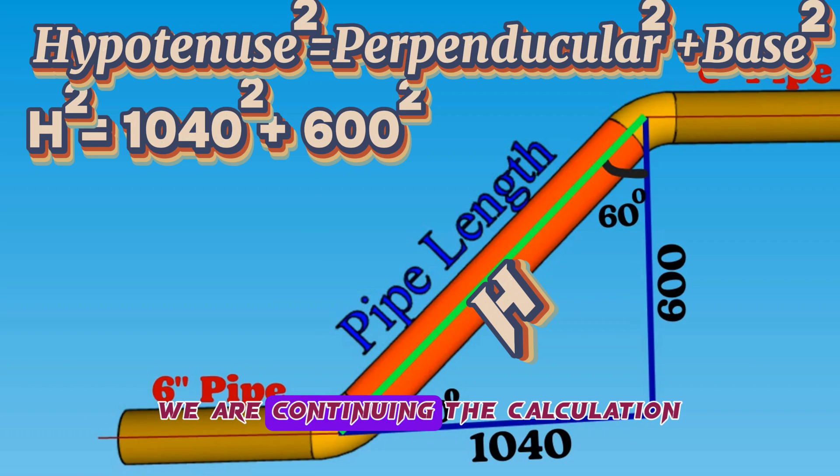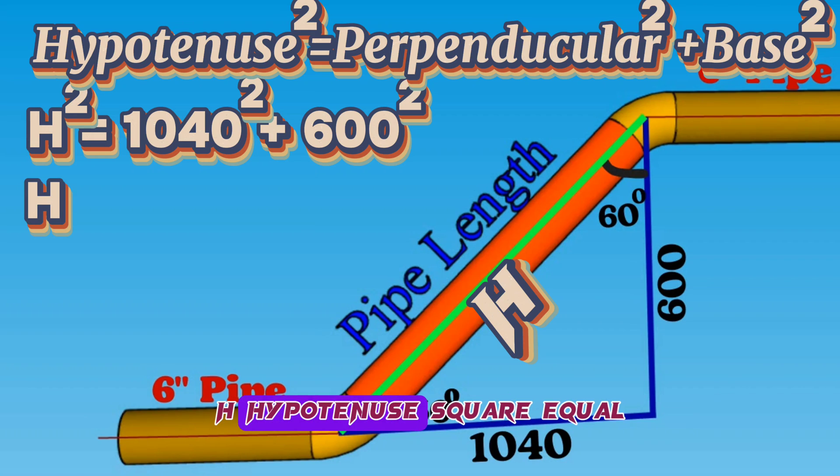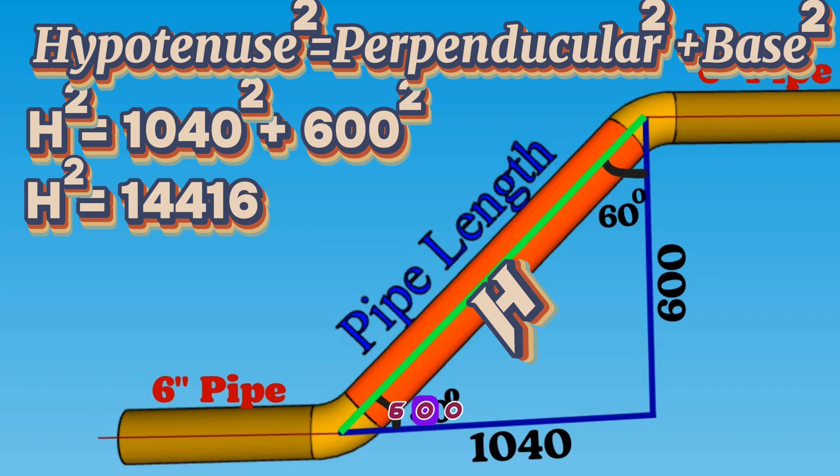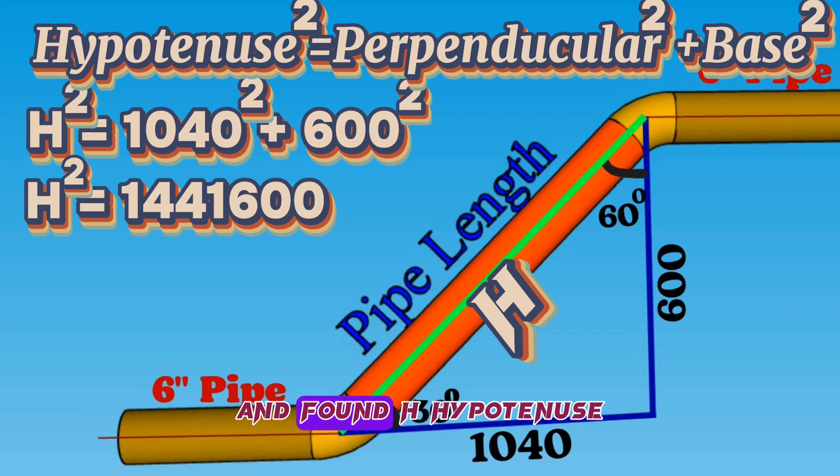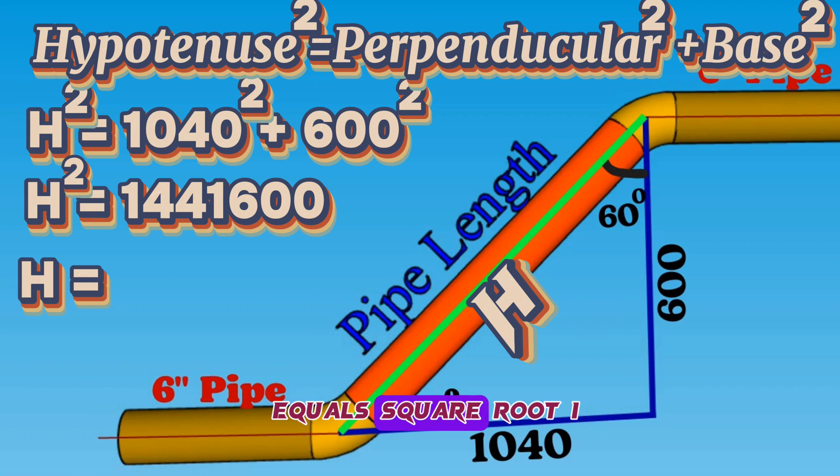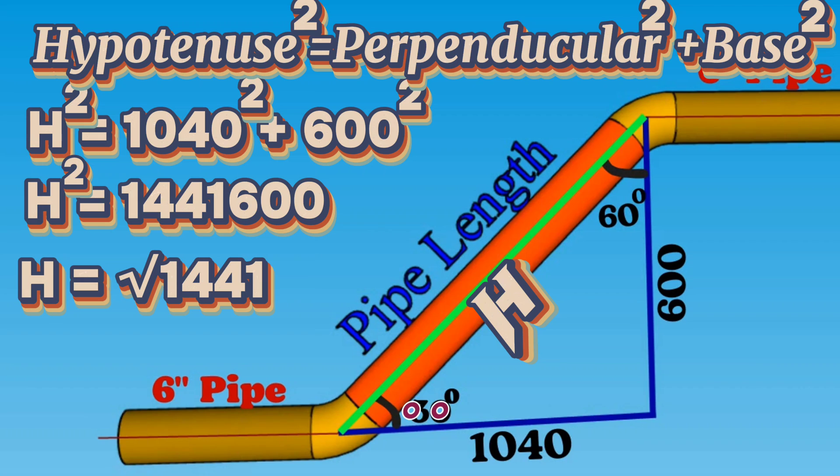We are continuing the calculation. H hypotenuse square equals 1441600. We are continuing again and found H hypotenuse equals square root 1441600.